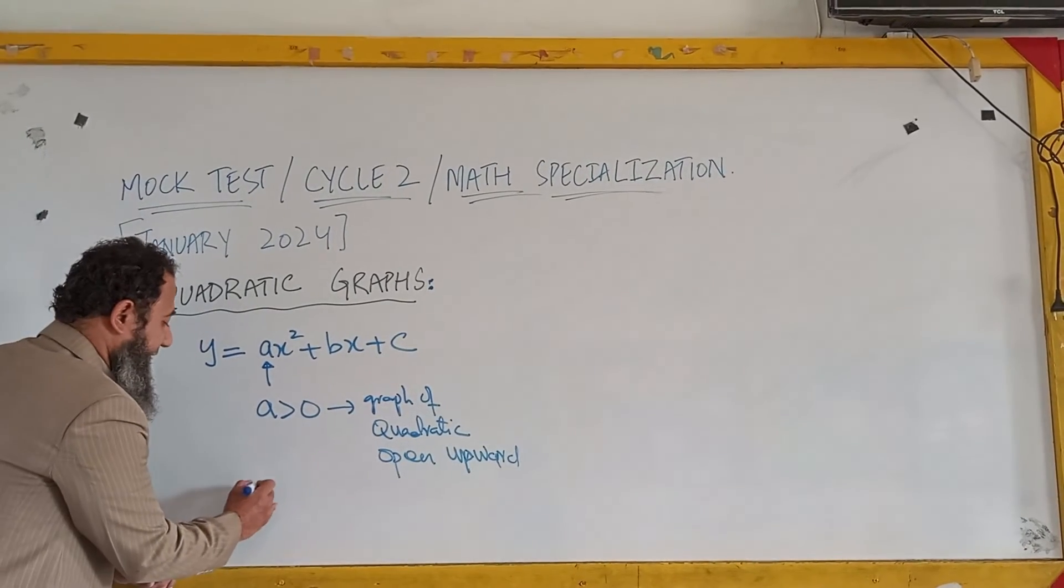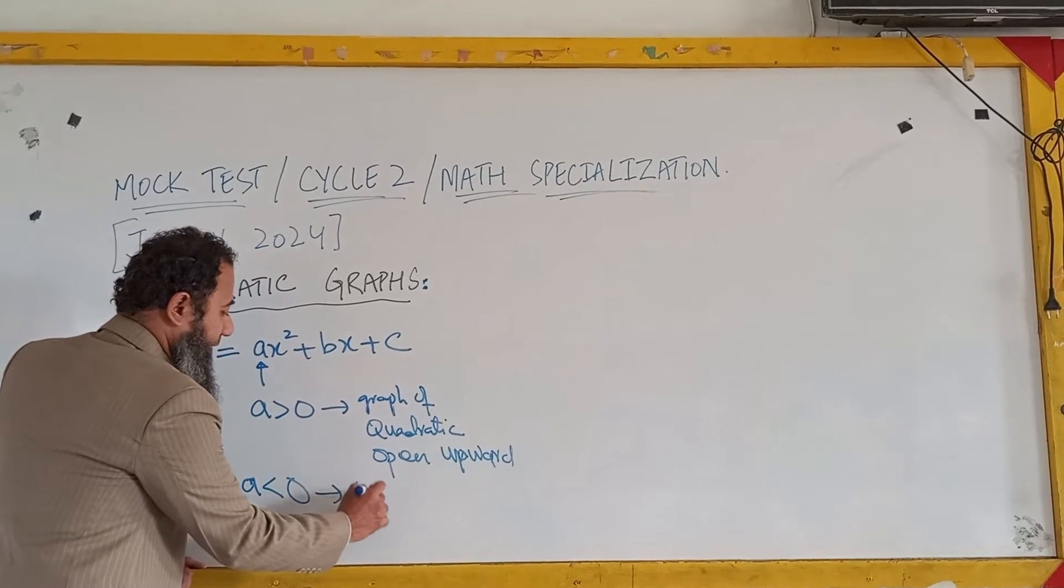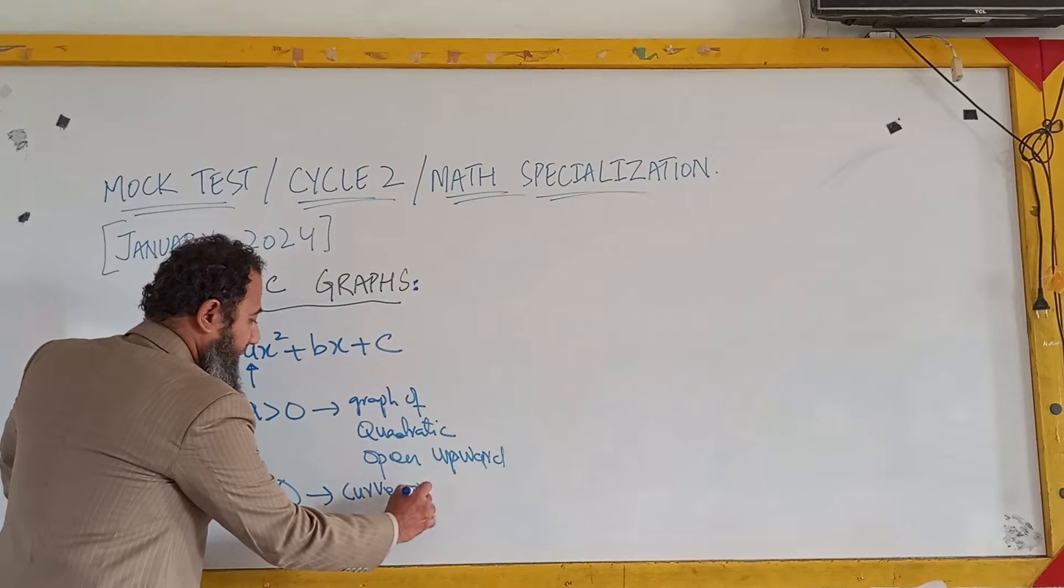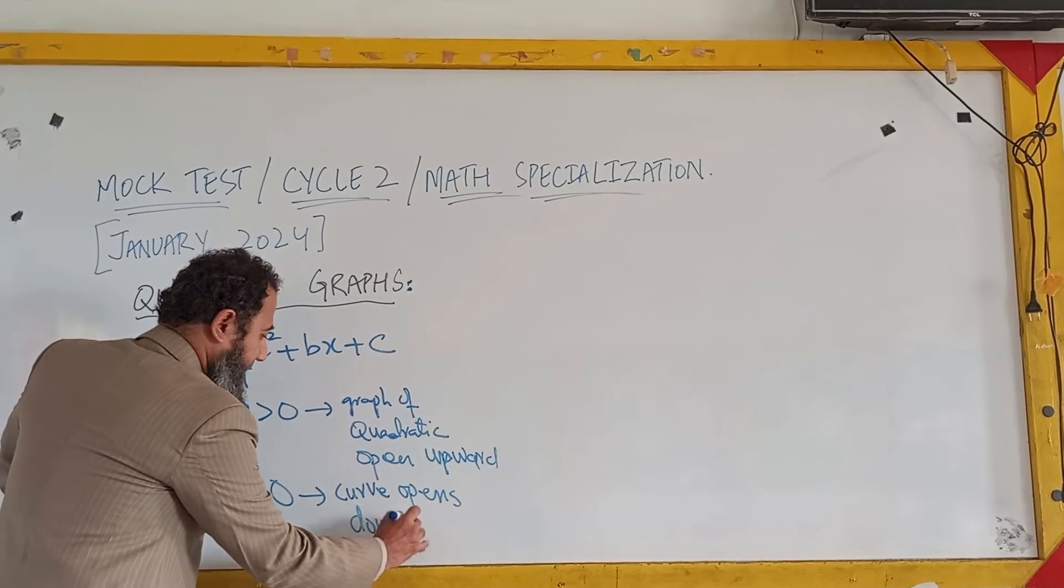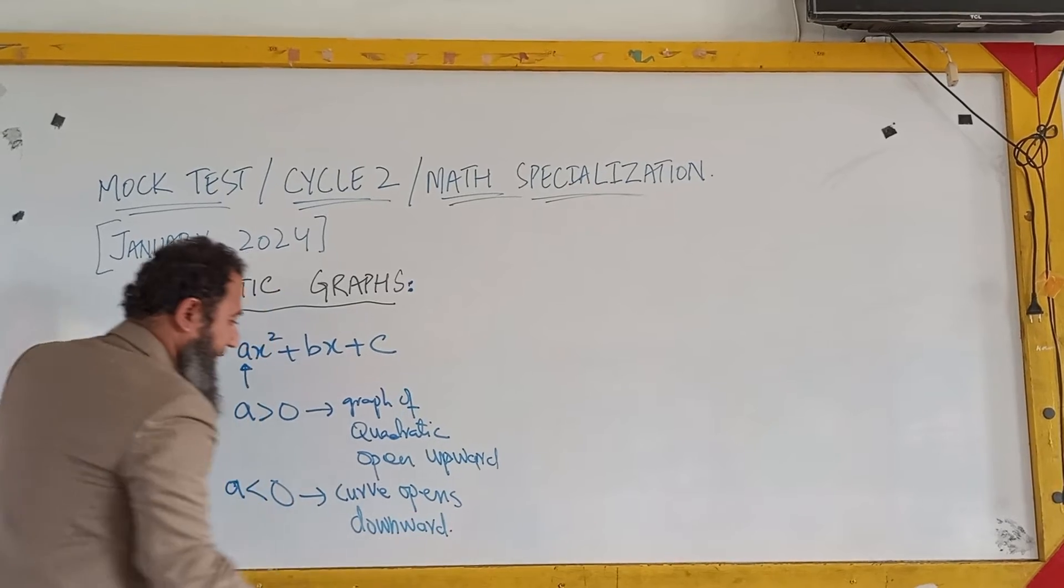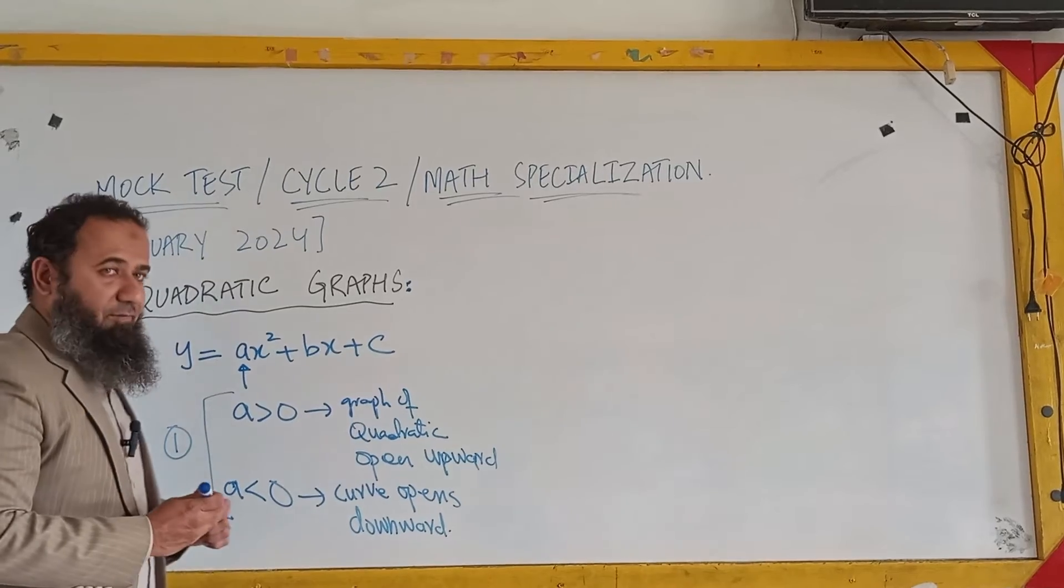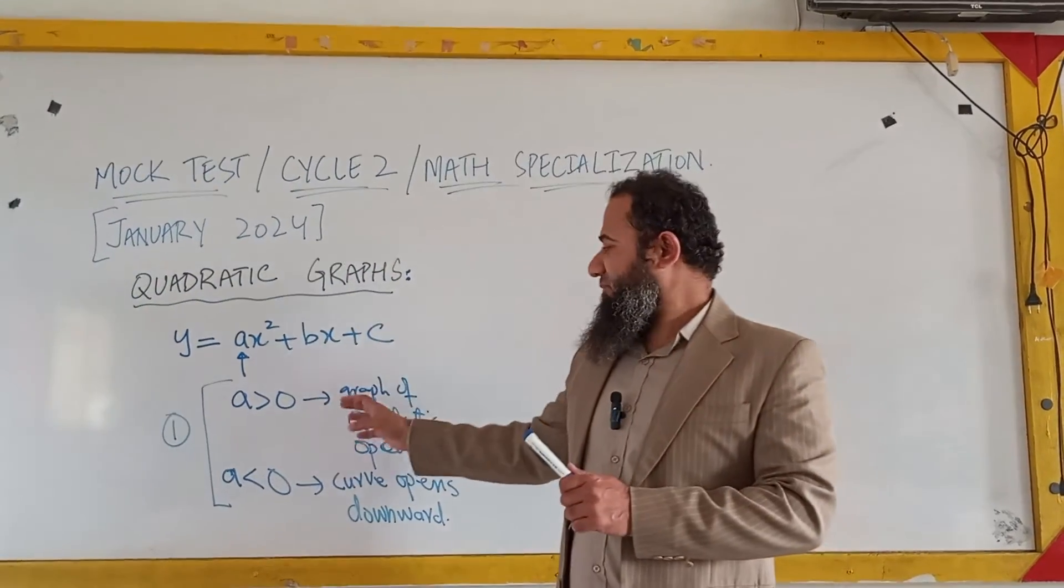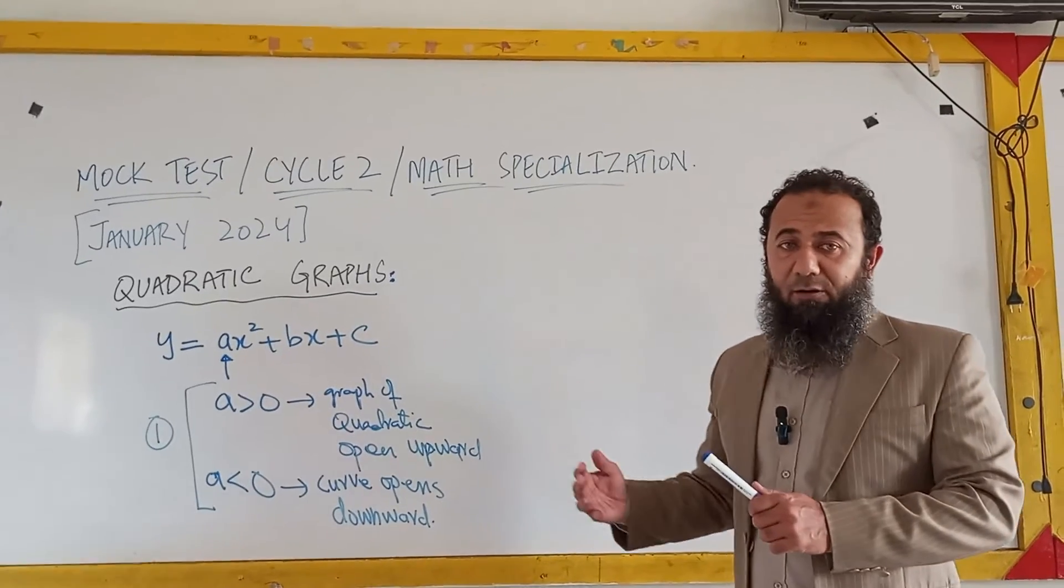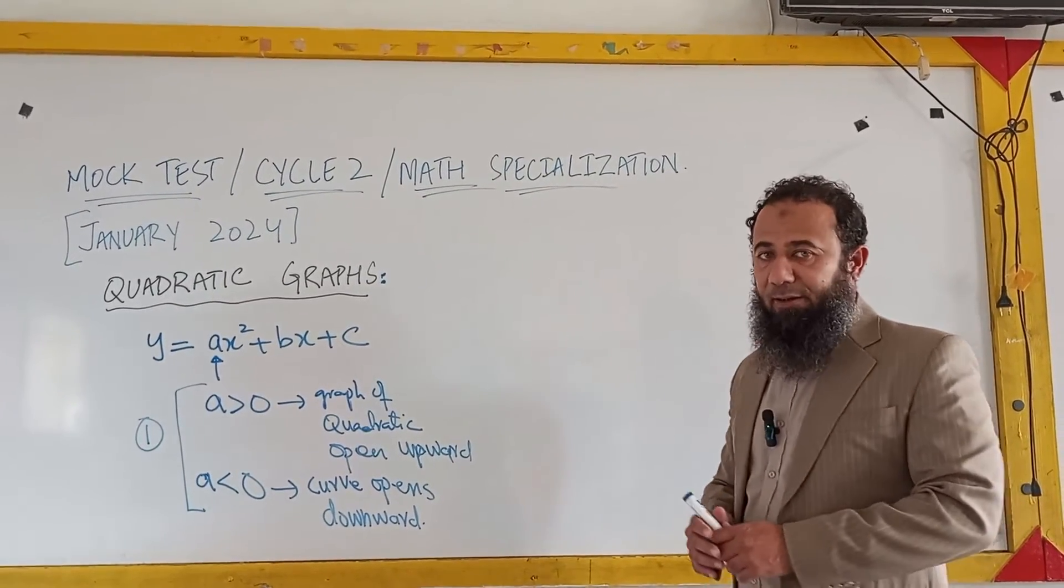But if the value of a is less than zero, the curve opens downward. These are the first phases of the quadratic equation because this phase helps you to draw a quadratic curve, this phase helps you to understand the quadratic curve as well.